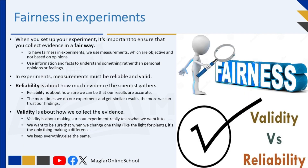When you set up your experiment, it's important to ensure that you collect evidence in a fair way. When we say experiments must be fair, it means that everyone should have an equal chance, and we shouldn't favor one thing over another. It's like playing a game where everyone follows the same rules, so no one has an advantage. In an experiment, fairness ensures that each part of the test gets treated the same way, so the results accurately show what we're testing without any unfair influences. This helps make sure our conclusions are reliable and trustworthy.